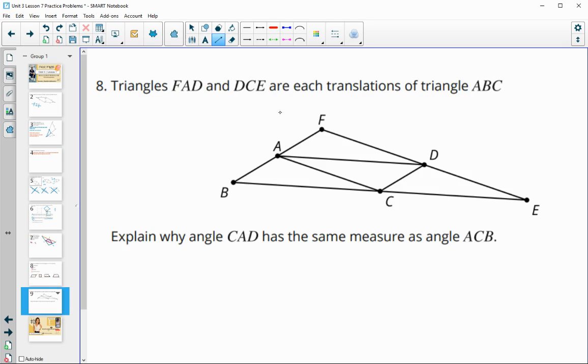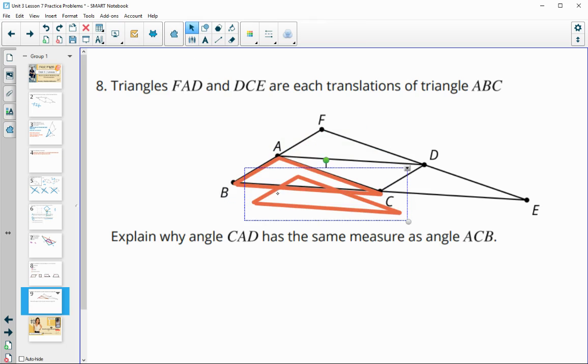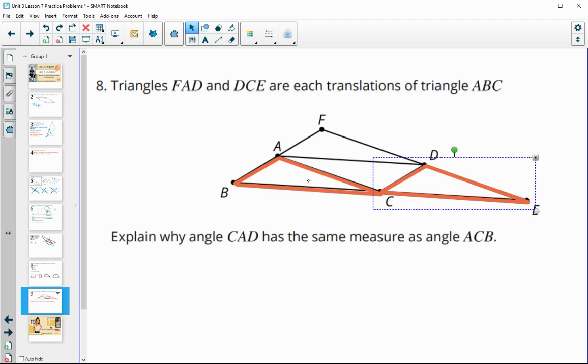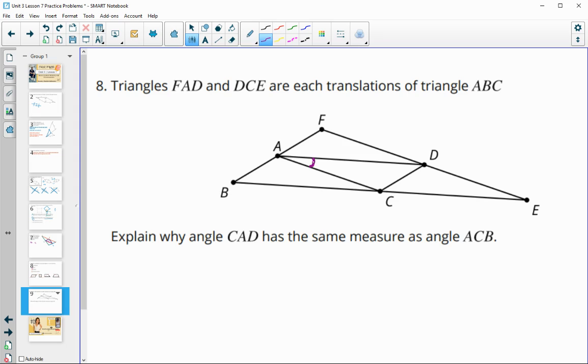Number eight: triangles FAD and DCE are both translations of triangle ABC. So let's look at that. So we've got here's triangle ABC, and then these other ones are translations of it. So if we take this and move it this way, we get that other triangle. And if we move it up here, we'll get FAD. So how do we know that CAD—so let me get rid of those—how do we know that CAD, this angle here, is equal to angle ACB, so this angle here? So how do we know that those two angles are congruent to each other?